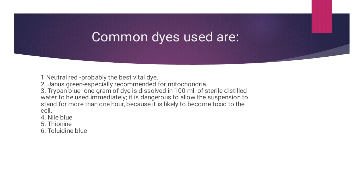Some common dyes used include: first, neutral red — probably the best vital dye; second, Janus green — especially recommended for mitochondria; third, trypan blue — one gram of dye dissolved in 100 mL of sterile distilled water, to be used immediately because it is likely to become toxic to the cell if allowed to stand for more than one hour; fourth, Nile blue; fifth, cyanine; and sixth, thionidine blue.